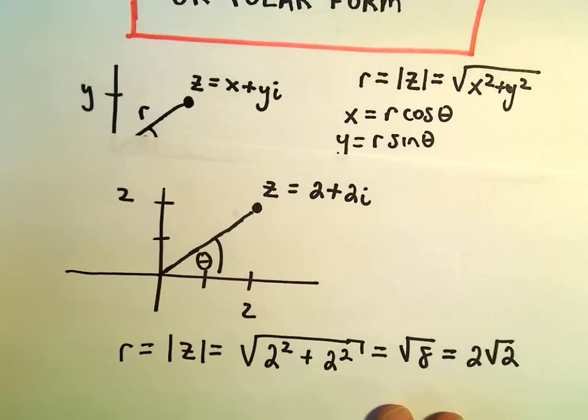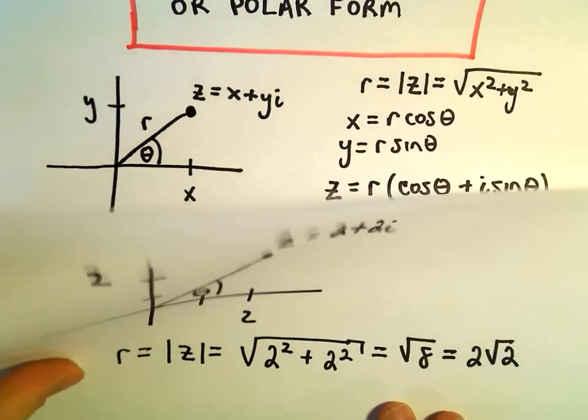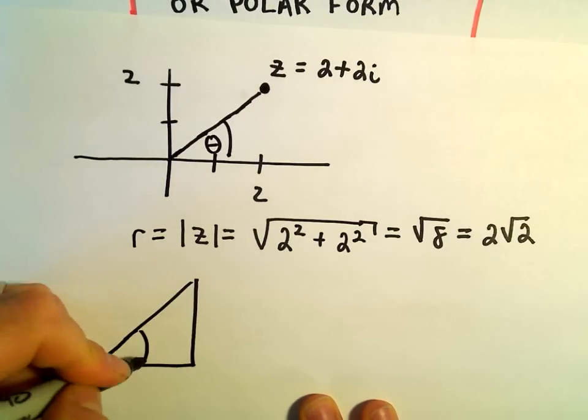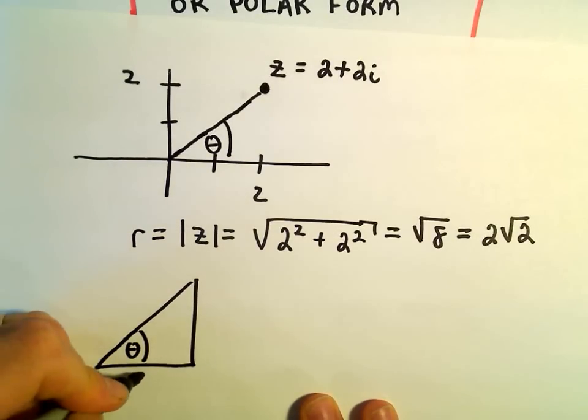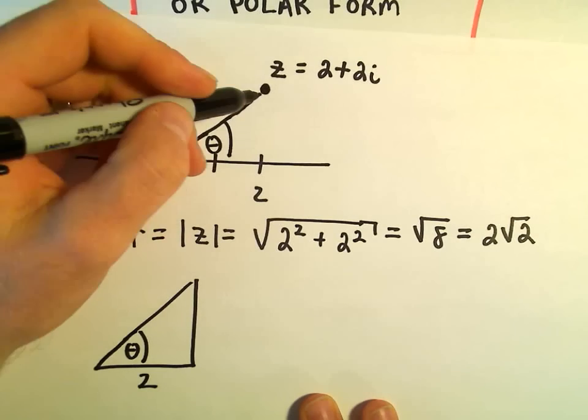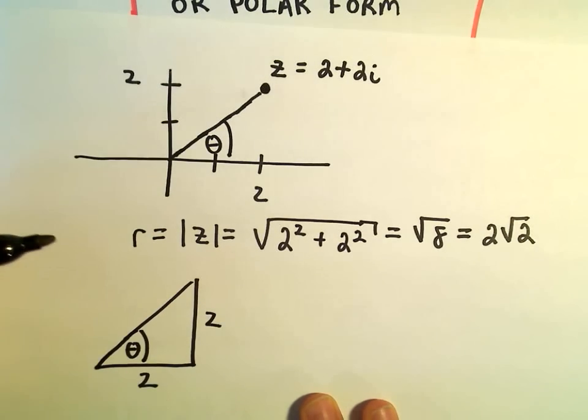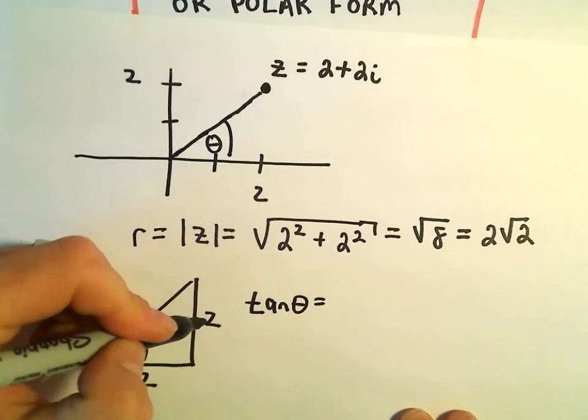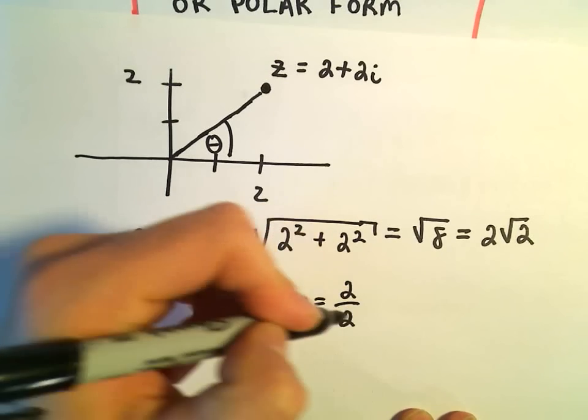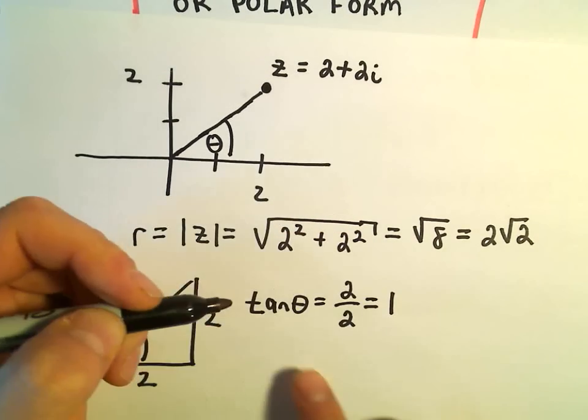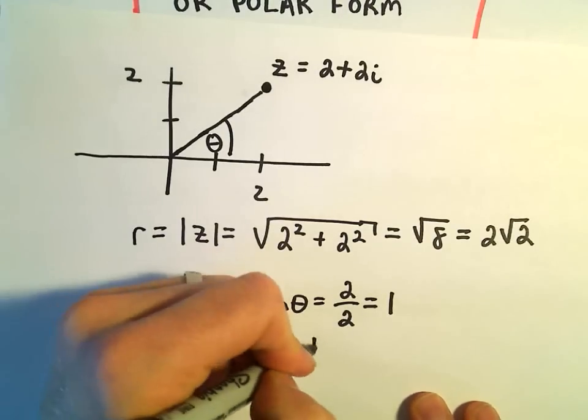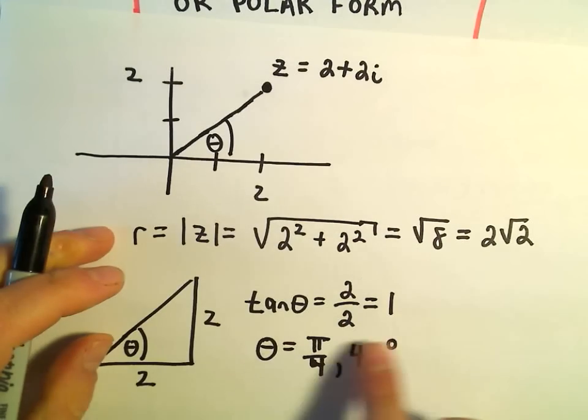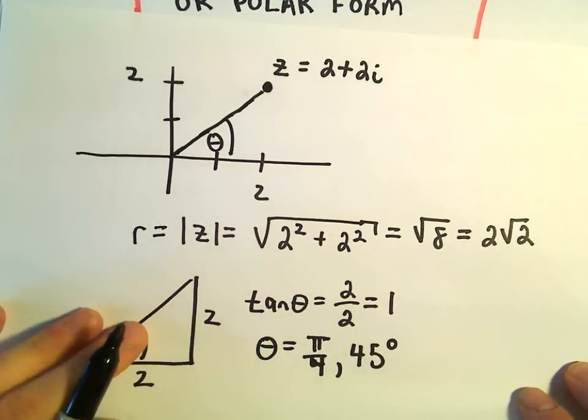We don't know our angle theta here just yet. But we can figure that out, just using a little bit of trigonometry. So the adjacent side has length 2. The opposite side also has a length of 2. If we do tangent of theta, we would get opposite over adjacent, so 2 over 2, which is going to be 1. Well, tangent of pi over 4, or 45 degrees, that'll give us 1. So now we know our angle theta.